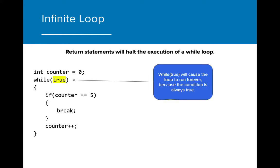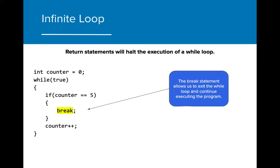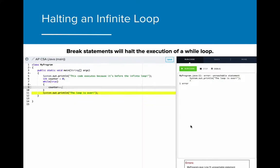In this particular program, the while loop condition is set to true. This means the program will run infinitely because the condition will never result in false. While this is an infinite loop, we can escape from it by using a break statement. The break statement allows us to exit the loop and continue to any code that follows the while loop. In this case, once the value of counter was equal to 5, the program would halt the while loop and move on to the code immediately following the loop. Here is a live demo of that problem.